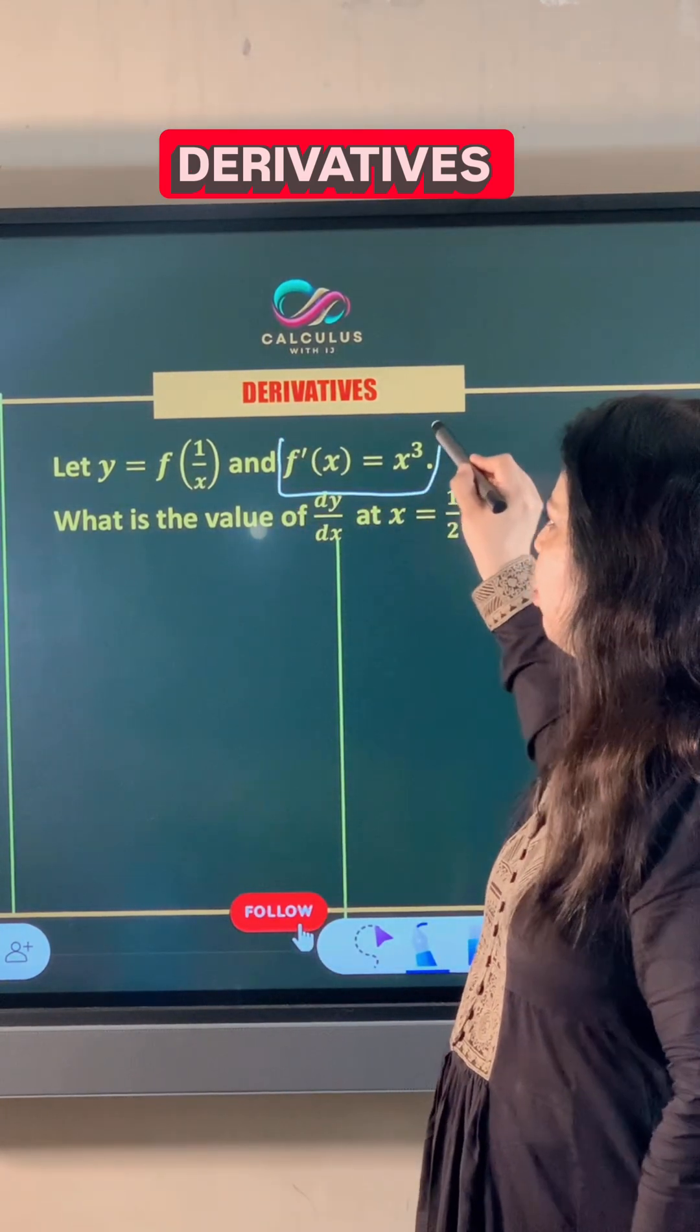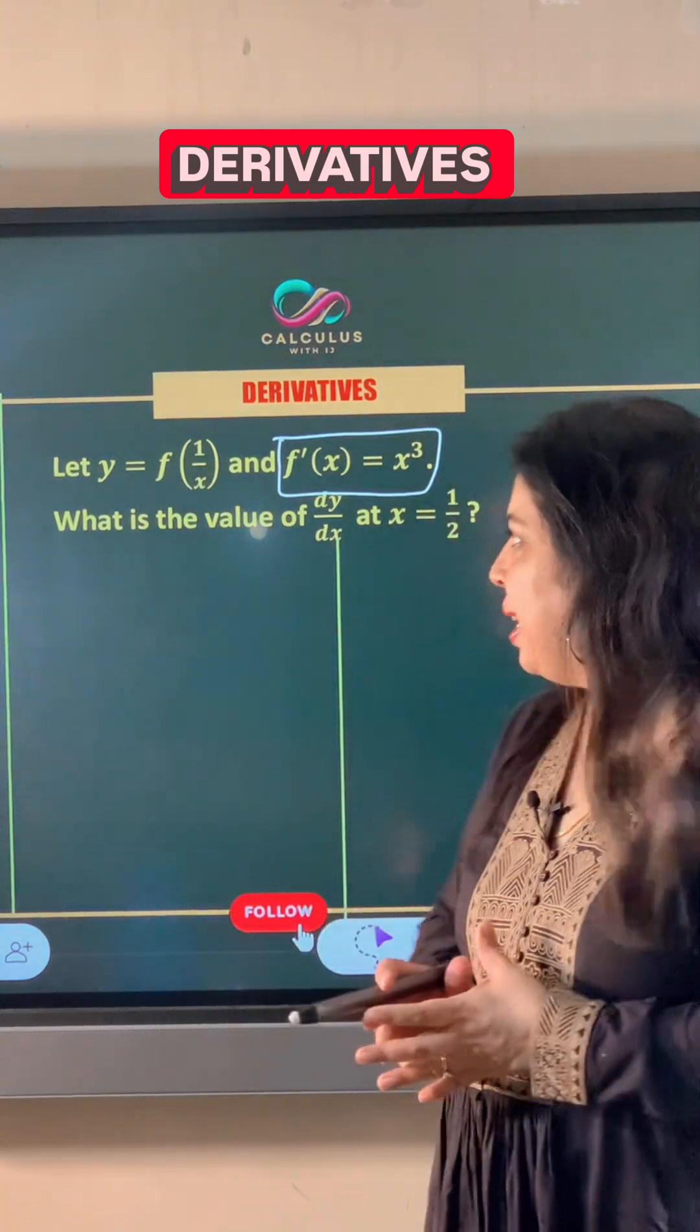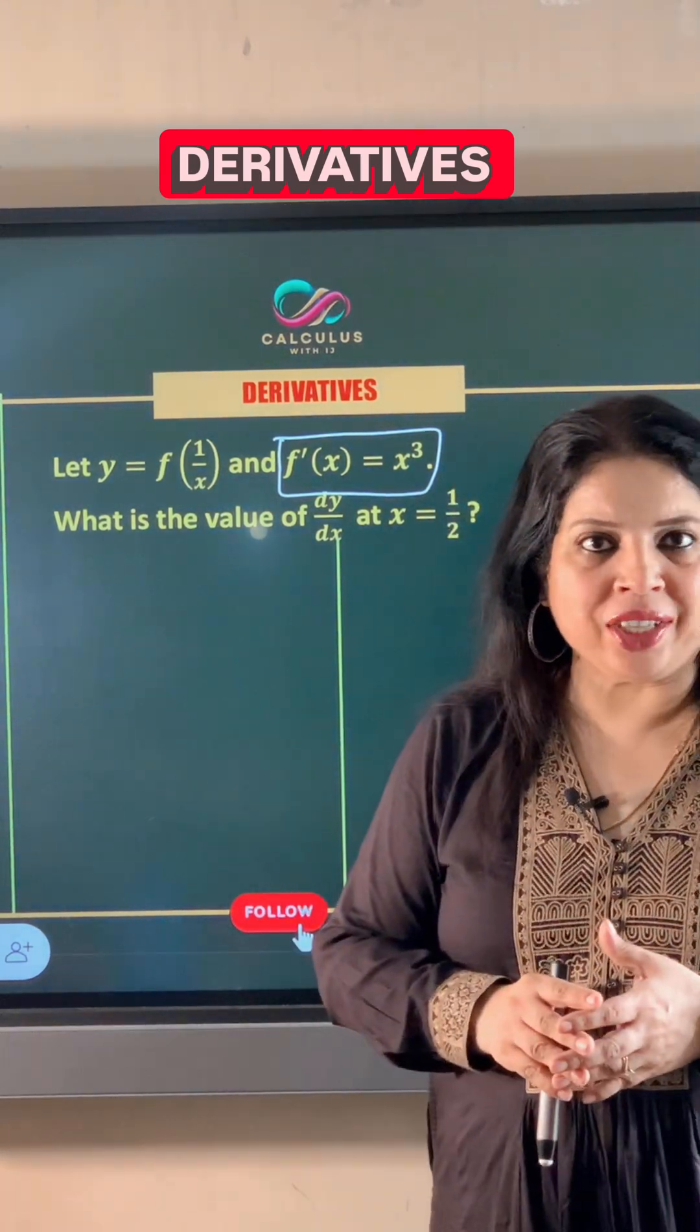f dash x means the first order derivative of f(x) with respect to x. That is denoted by f dash x.